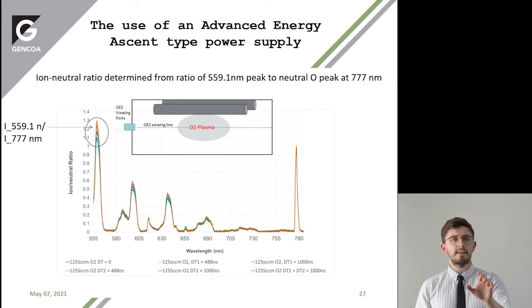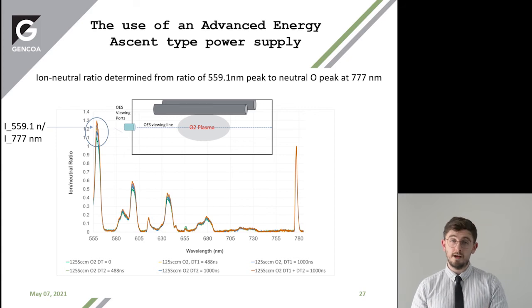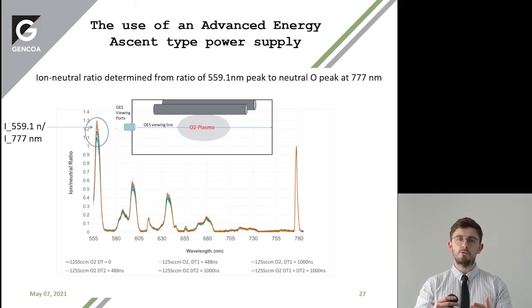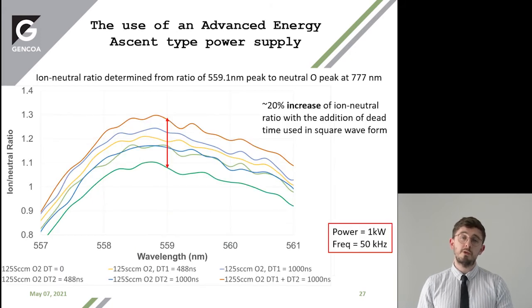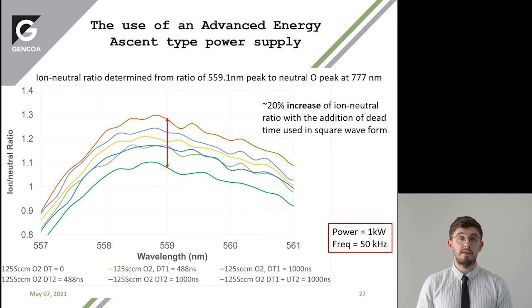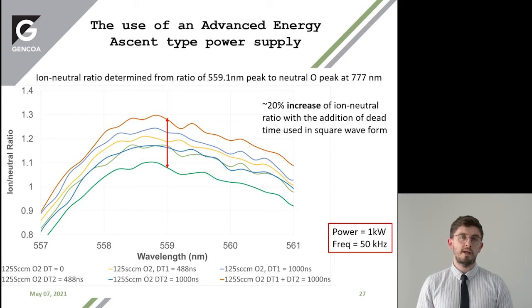When we look at the ion-to-neutral ratio and vary the dead time from 0 nanoseconds to 1000 nanoseconds, we are changing this ion-to-neutral ratio. The most positive situation was when we used 1000 nanosecond dead time on the first half of the cycle of the pulse and 1000 nanosecond dead time on the second half, giving a 20% increase in the ion-to-neutral ratio for O₂ ions.